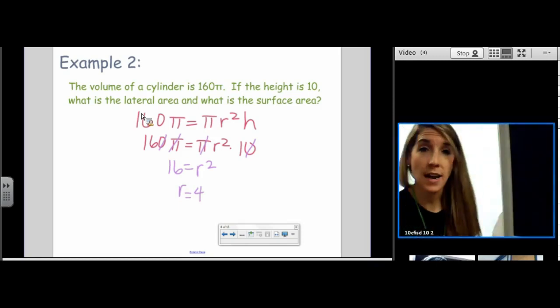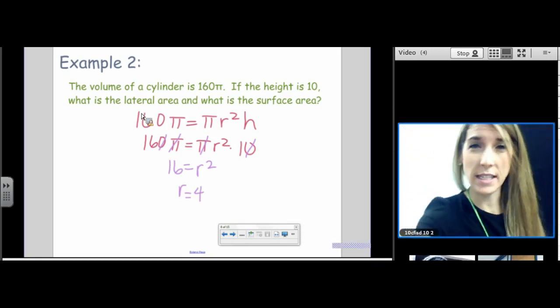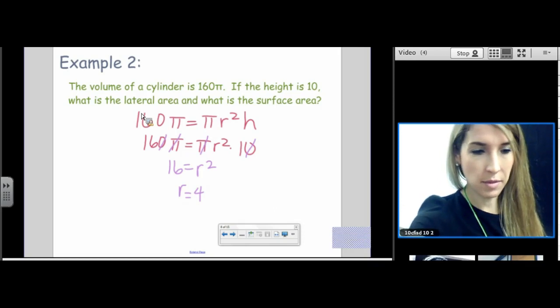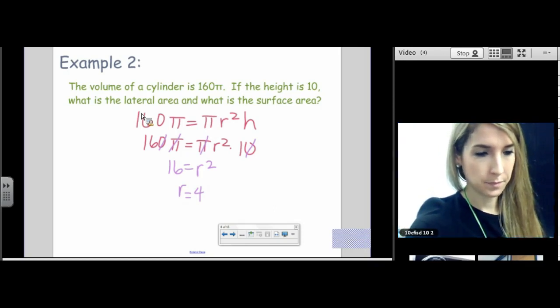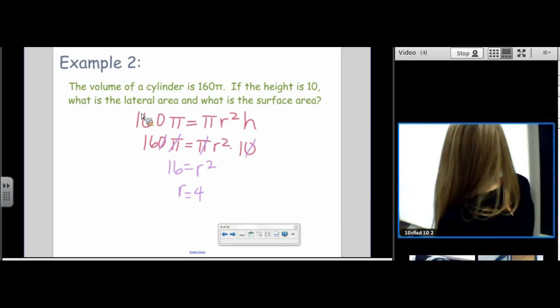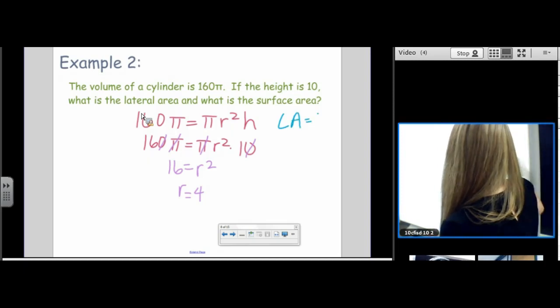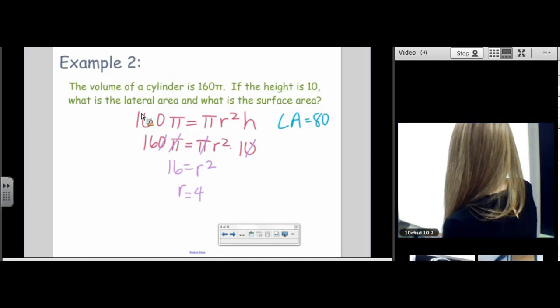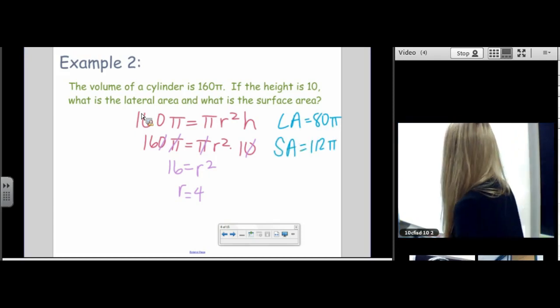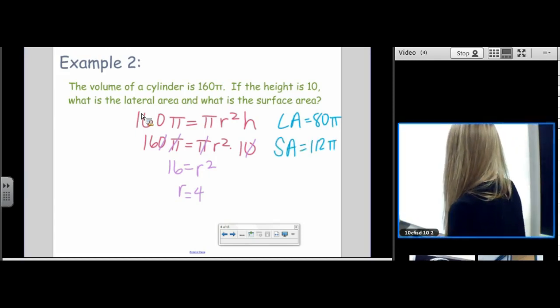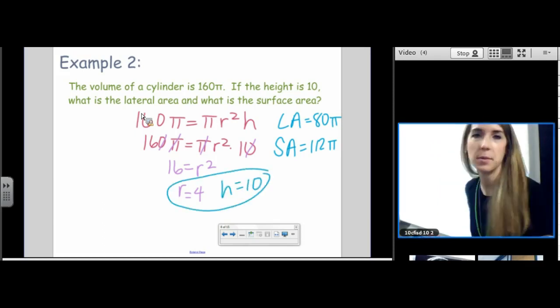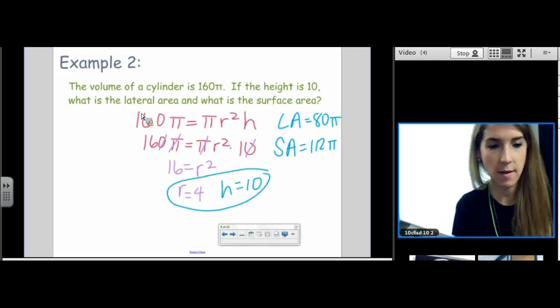So our lateral area is 80π. And our total surface area is 112π. Once you know the radius and the height, the rest of it is simply plugging into formulas. Following the formula.